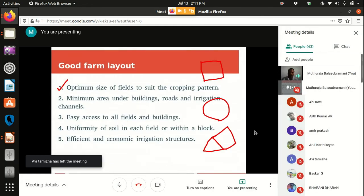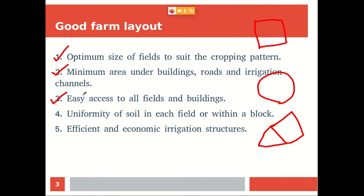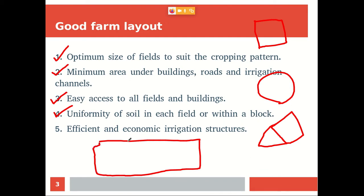There should be easy access to all fields and buildings, so roadways and pathways should be created accordingly. There should be uniformity of soil in each field or within a block. In a hundred-acre farm, the soil structure and fertility may vary, so at least in nearby fields the soil character should be uniform. Only then will uniform yield result — otherwise growth will be present in some parts and absent in others.